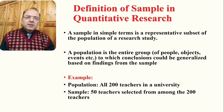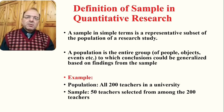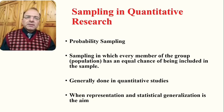A simple example of a population would be all 200 teachers teaching in a university. A sample of 50 teachers selected from among those 200 teachers would be an example of a sample from that population. The proportion of the sample will vary from study to study, keeping in view factors such as aims and objectives of the research, accessibility of the population, and time and resources available.